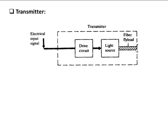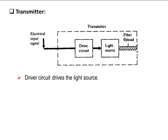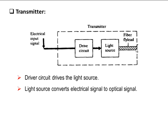The optical transmitter performs two basic functions. The first is to convert electrical signal into optical signal, and second is to launch the light into the fiber. The transmitter consists of a light source and a drive circuit. The drive circuit drives an optical source to modulate the light wave carrier, and the optical source converts electrical signal into optical signal.